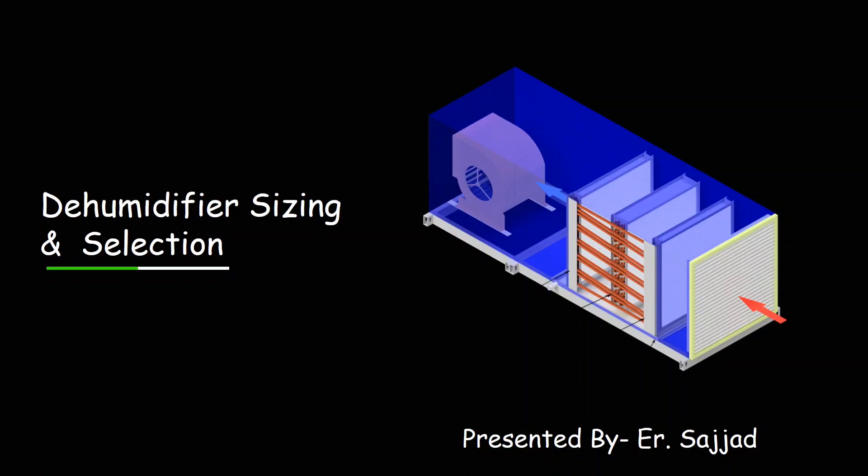Welcome back to the new lecture. In this lecture we'll discuss dehumidifier sizing and selection. First we have to understand what a dehumidifier is and its main purpose. A dehumidifier is a device used to reduce and maintain the humidity level in indoor air by removing excess moisture. It is widely used in residential, commercial, and industrial environments to enhance comfort, protect building materials and goods, and improve air quality.